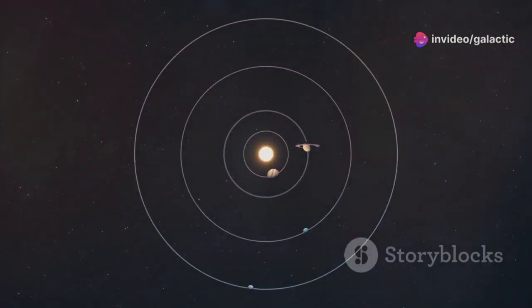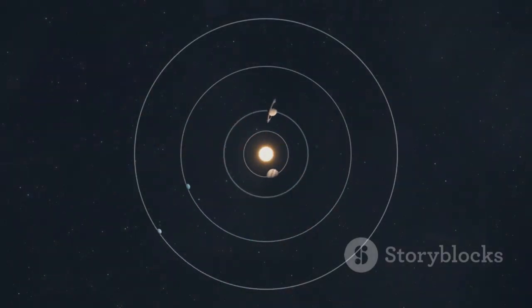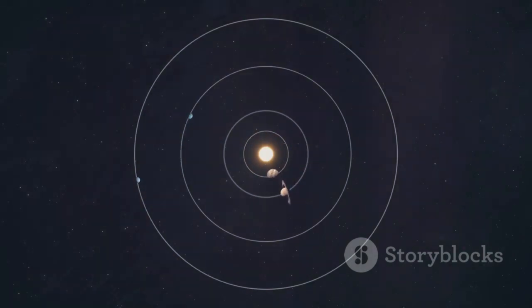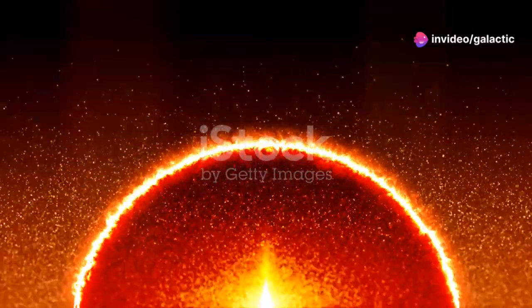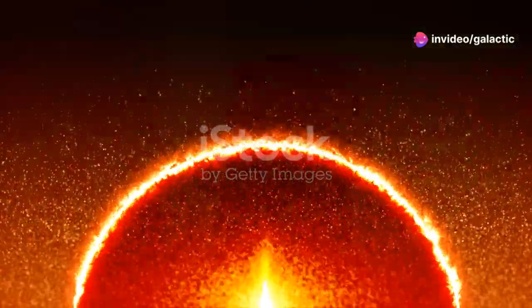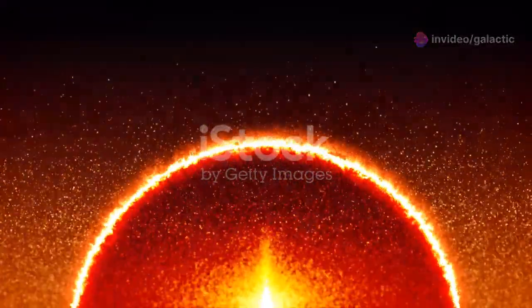Both have a central point of mass: the nucleus in an atom, composed of protons and neutrons tightly bound by the strong nuclear force. Similarly, the sun serves as the central point of mass in our solar system, around which all planets orbit due to gravitational pull.